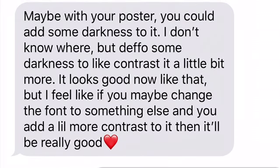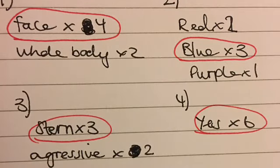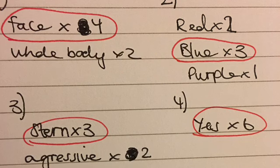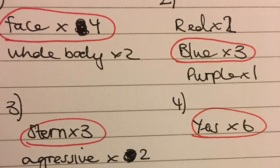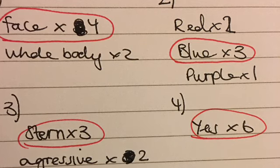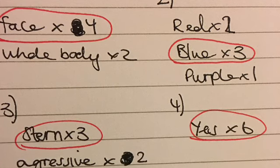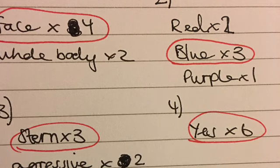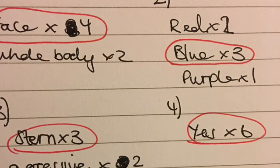That audience feedback really helped me. I asked four questions in relation to my film poster: one, what type of image do you want to see — a medium close-up or a close-up? Two, what colour wash would you like to see? Three, what facial expressions? And four, do you like the slogan 'you're not alone'? I got four votes for face for number one, three for blue for number two, three for stern face for number three, and six yeses for number four. I might mix some of the options — like the blue and the purple — because they might look good together and be more flattering on her skin tone.